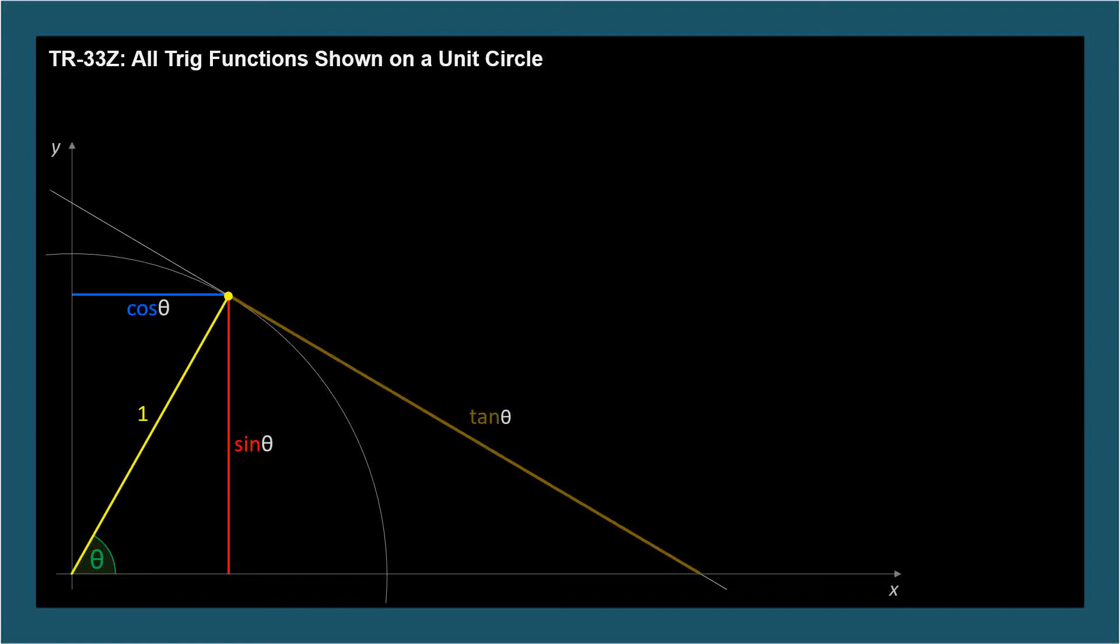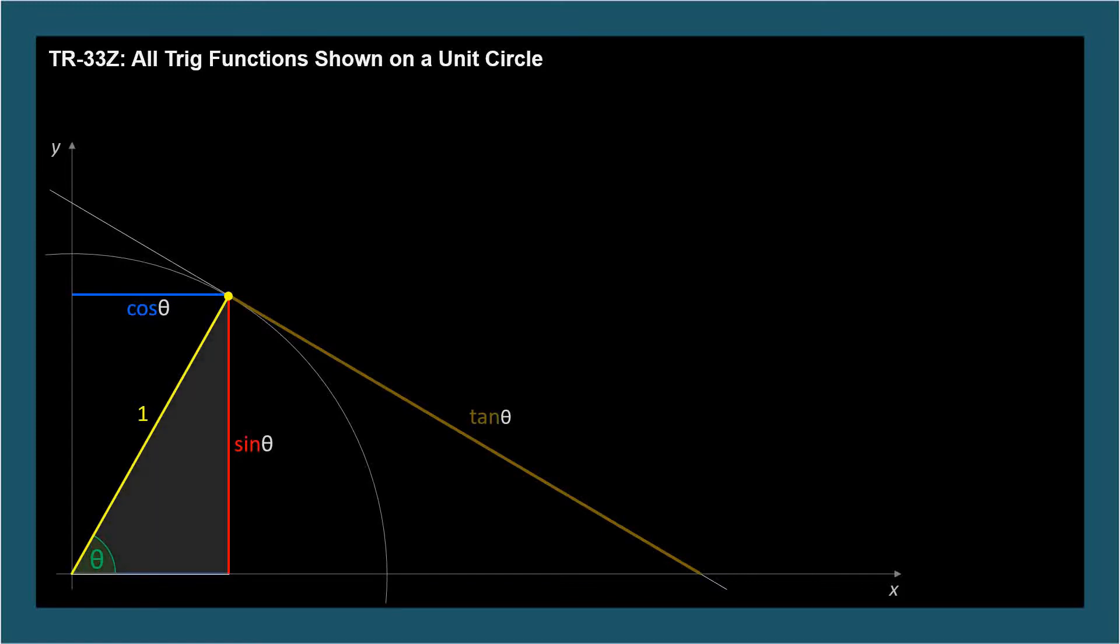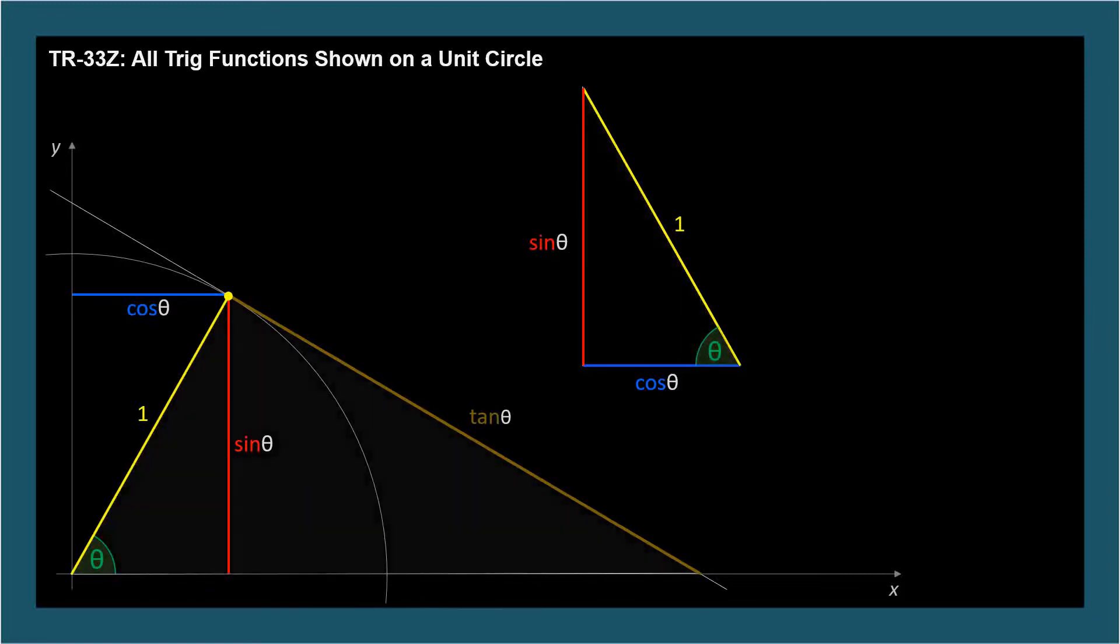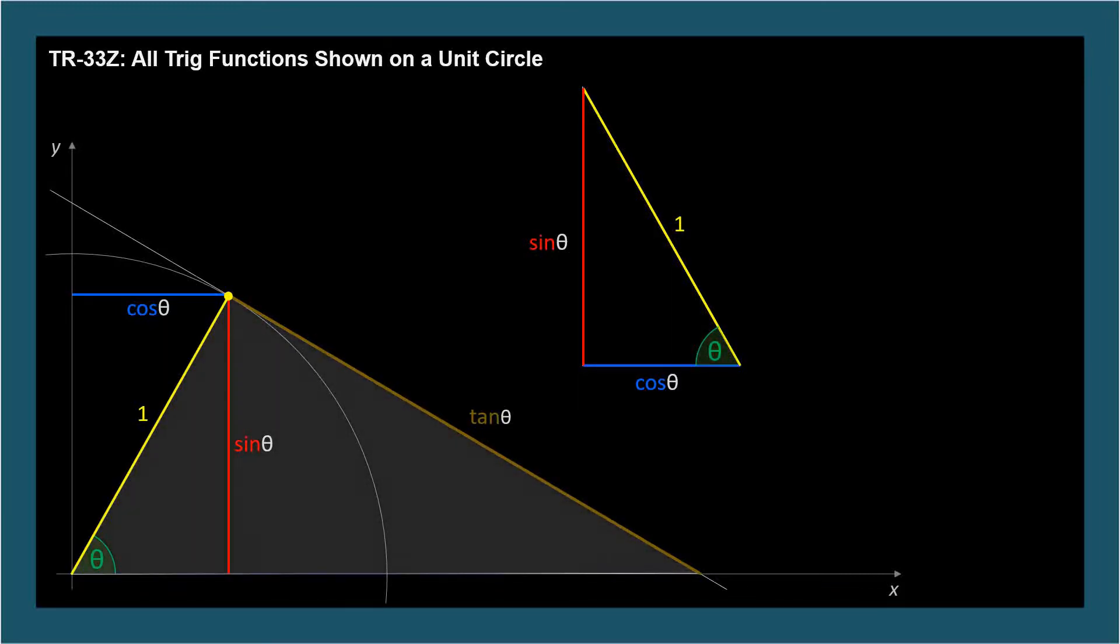Since this is the tangent of theta. But you don't have to believe me, I'll prove it using properties of similar triangles. Let's consider this triangle and flip it around. Its sides are color-coded to cosine and sine of theta and 1. Now let's consider this larger triangle.